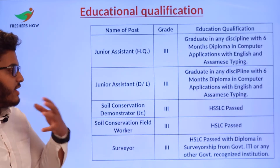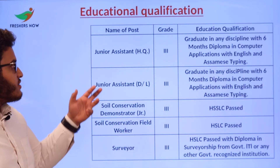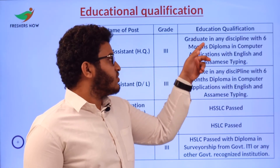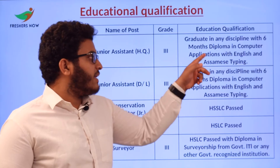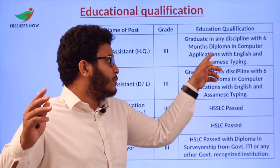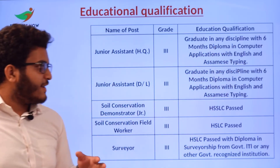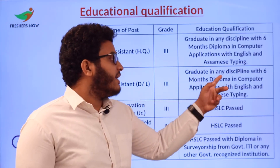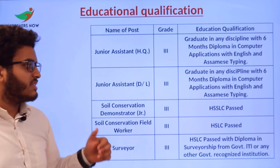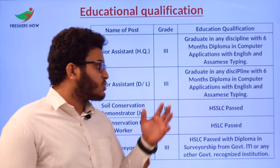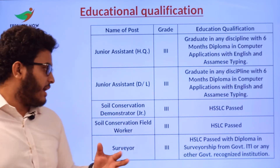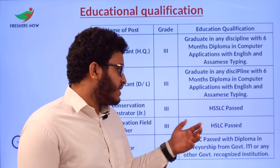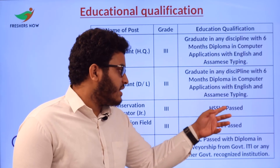Now let's see the education qualification for each post. For Junior Assistant HQ Grade 3, the qualification is graduate in any discipline with 6 months diploma in computer applications with English and Assami typing. Junior Assistant DL Grade 3 requires the same. Soil Conservation Demonstrator Junior Grade 3 requires HS/SLC passed.